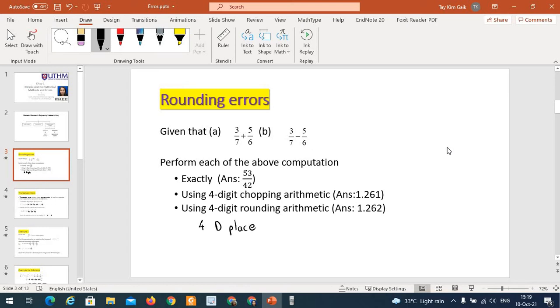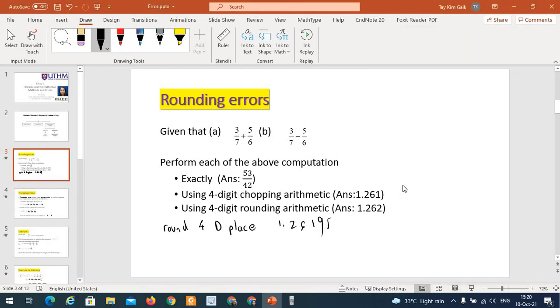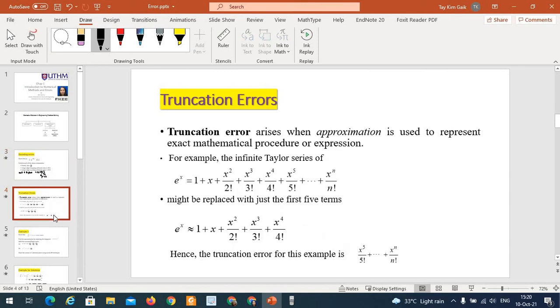4 decimals, so we look at this digit. If greater than 5, this one is plus 1, that's the answer. If 5, we just remove it. This is rounding.